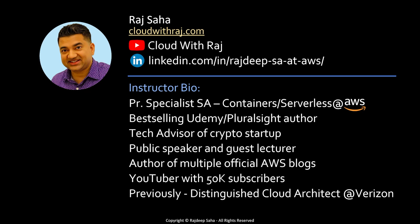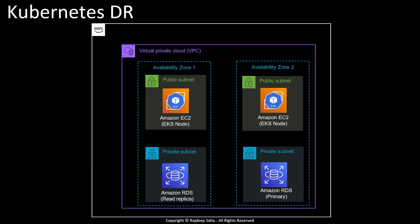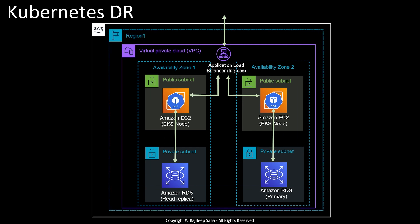How do you achieve disaster recovery for a Kubernetes cluster? Let's take a look at a typical Kubernetes cluster setup. Your EKS cluster will be running inside a VPC, and this VPC will use a few availability zones. You will run worker nodes or EC2s in these availability zones, and inside these EC2s your application will be running inside pods. You will use ingress to route traffic to these pods, and also some sort of database running in a private subnet. This architecture will be running inside a region — let's say region one.